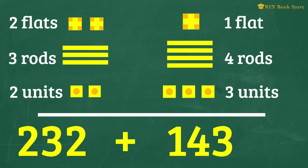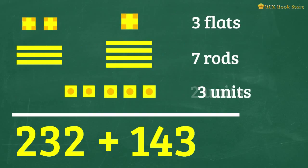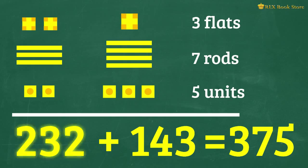Put them together and we get 3 flats, 7 rods and 5 units. This represents 375. So 232 plus 143 is equal to 375.